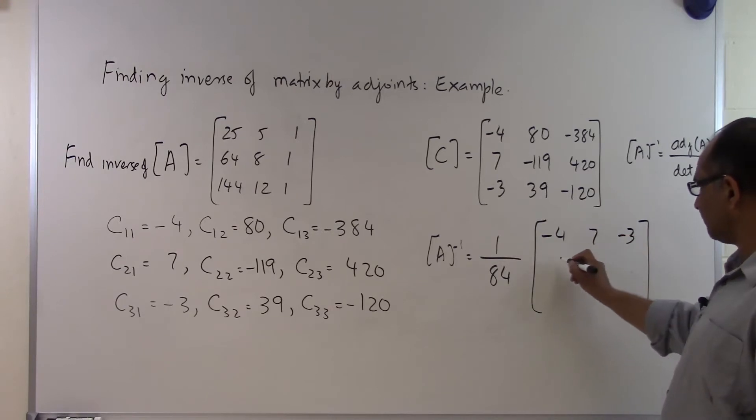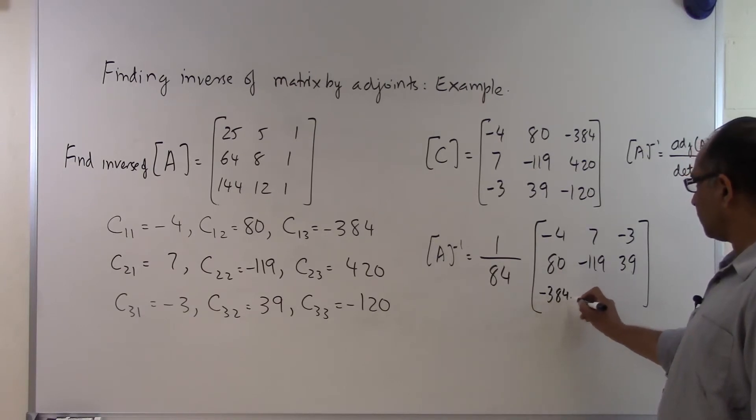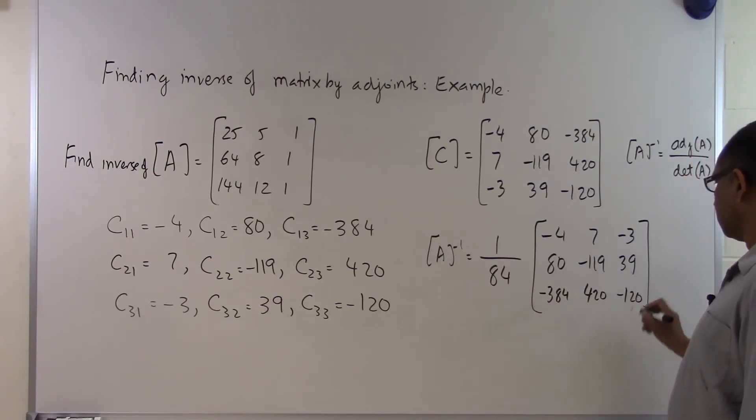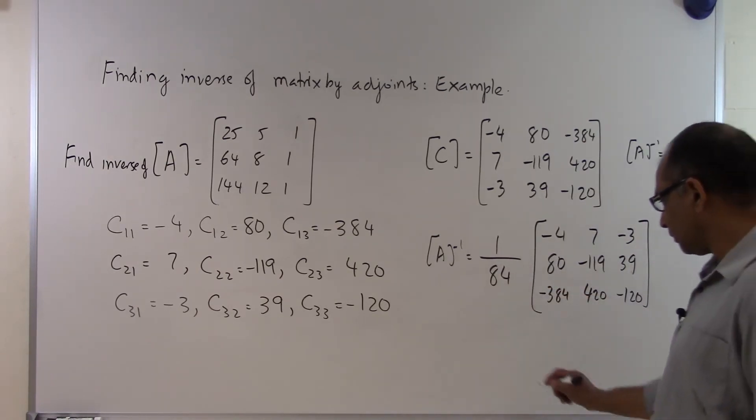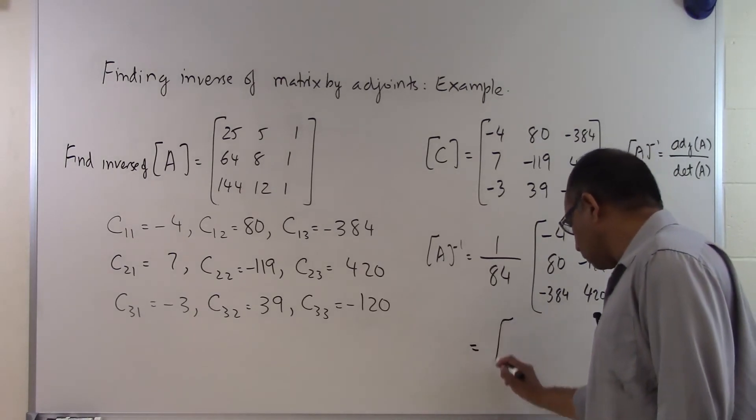The transpose of this matrix is minus 4, 7, minus 3, 80, minus 119, 39, minus 384, 420, and minus 120. That's the transpose of this matrix, that's C transpose. And I divide it by the determinant of the matrix.